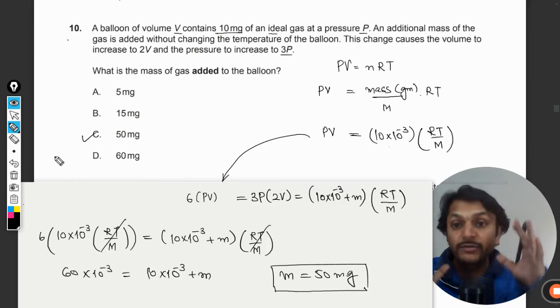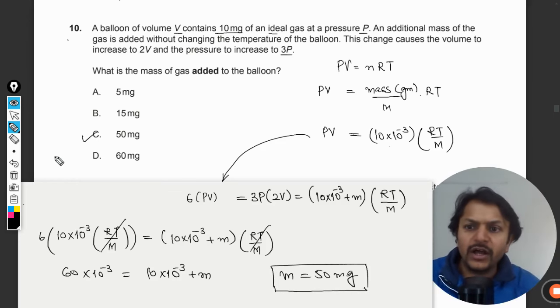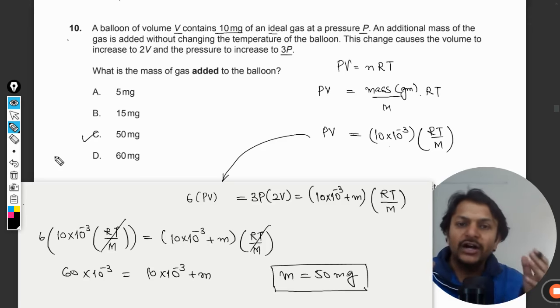So the new mass that will be added is 50 milligrams, and so C will be the correct answer. This is how we do this question.